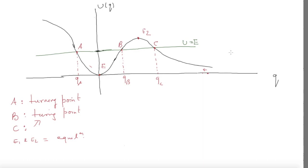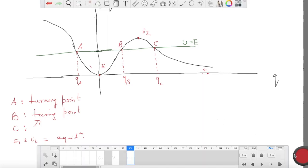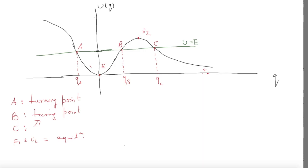Points E1 and E2 are points of equilibrium — one is stable, the other unstable. These are all possible motions in a one-dimensional system: it can oscillate back and forth between turning points, or it can go to a turning point and escape to infinity. If you put the system exactly at E2 with that energy, or at E1 with energy 0, it stays there forever undisturbed.